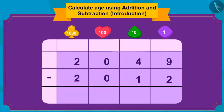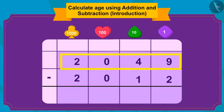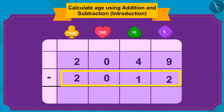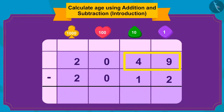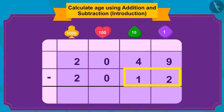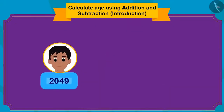Children, do you know the process of doing this subtraction quickly? Since in 2049 and 2012, the thousands and hundreds digits (2 and 0) are exactly the same, we can do the subtraction by subtracting 12 from 49. What will we get if we subtract 12 from 49? Absolutely right — 37! So, Raju's age in the year 2049 is 37 years.